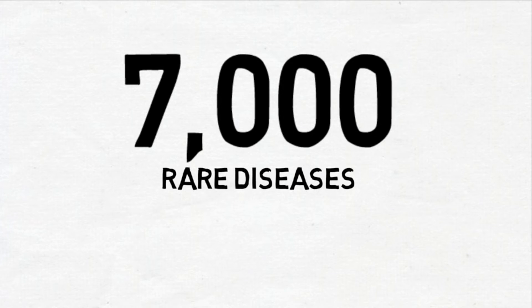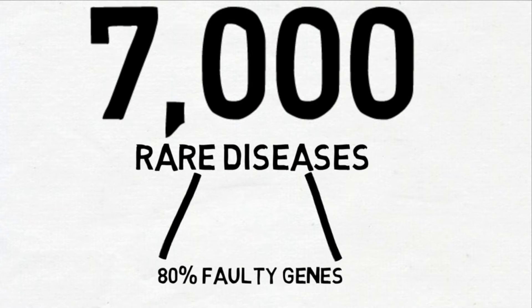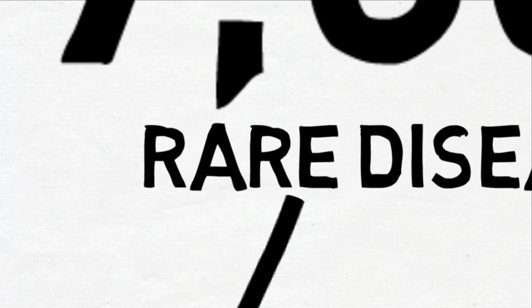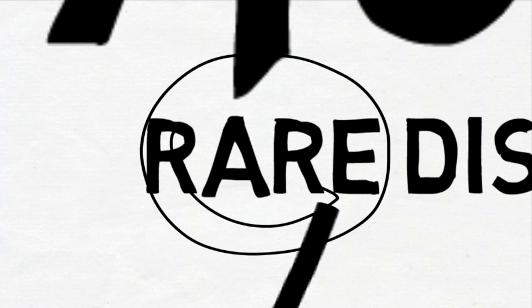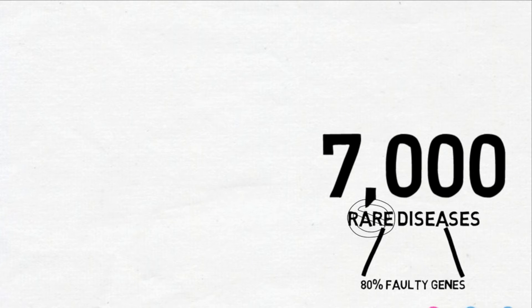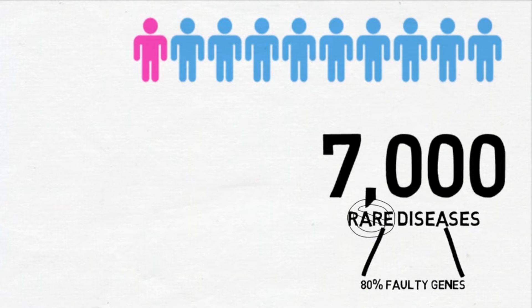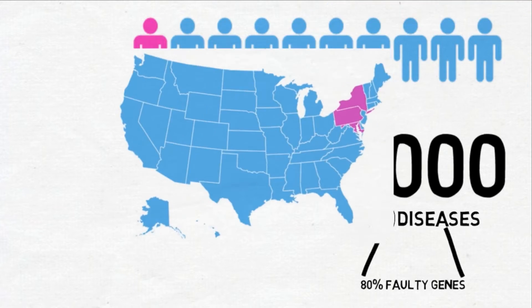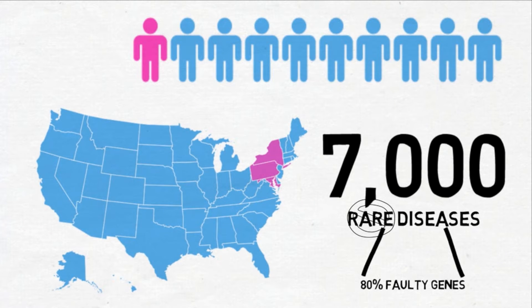There are over 7,000 known rare diseases and as much as 80% of these are caused by faulty genes. Despite the implication of the word rare, a rare disease is not uncommon. In the United States alone, 30 million people are affected. This equates to every 1 in 10 Americans or the populations of New York, Pennsylvania, and Maryland combined.